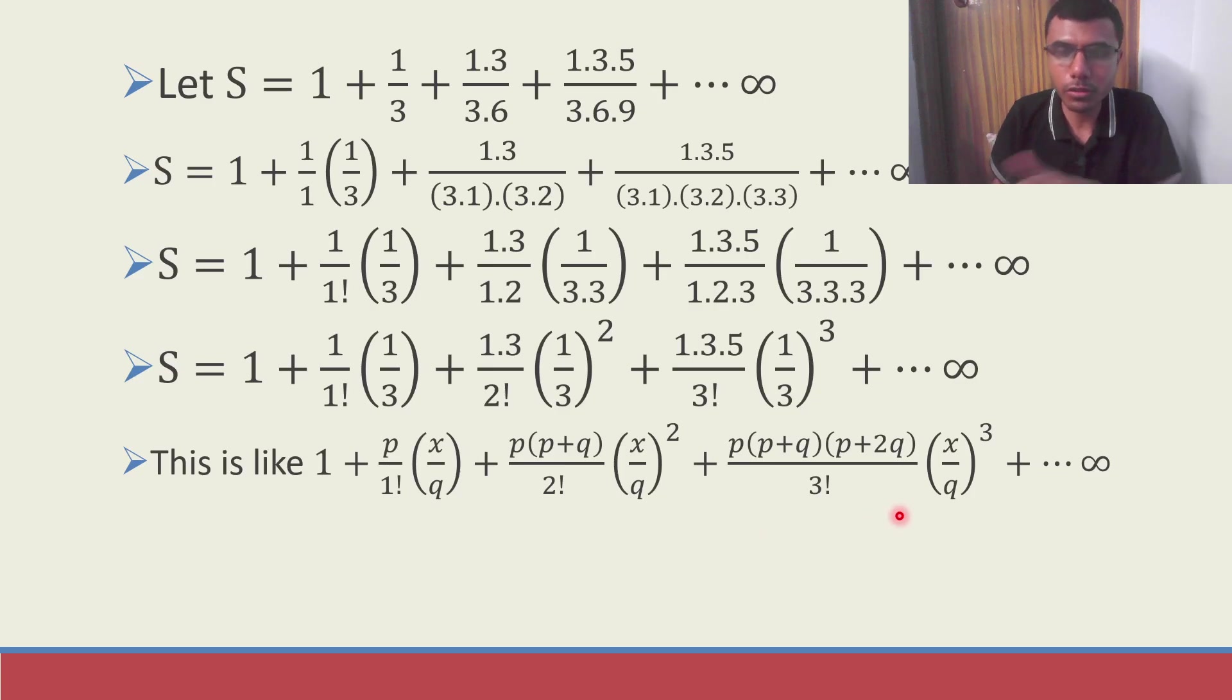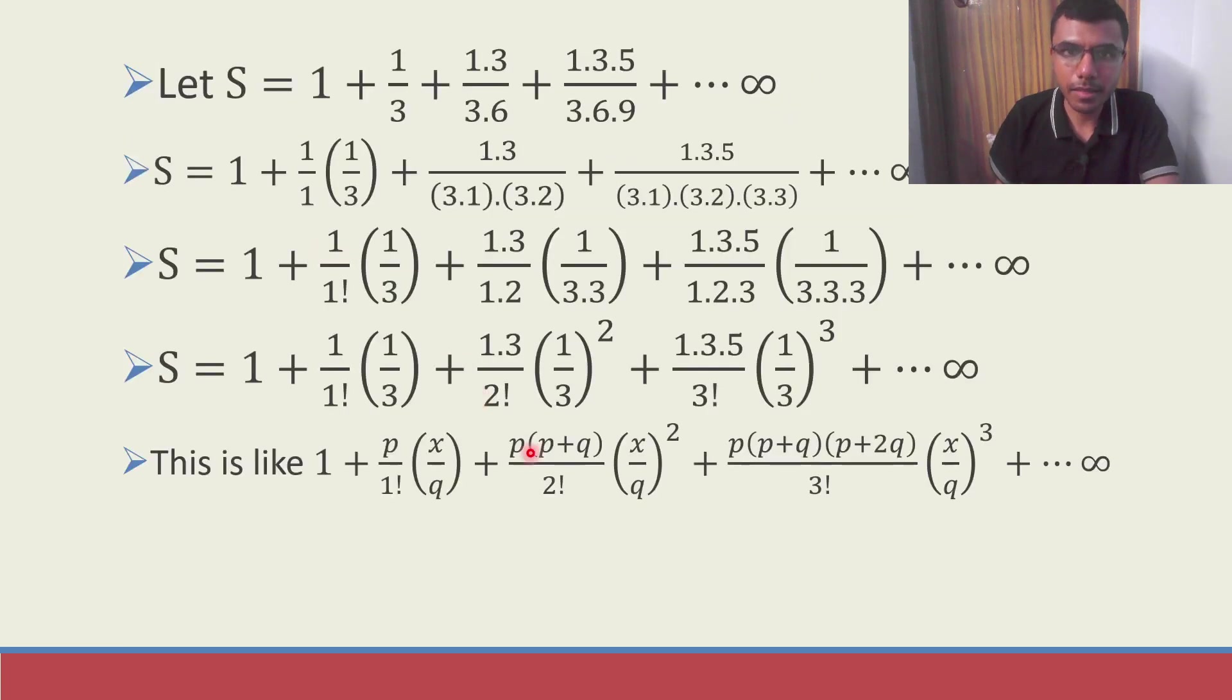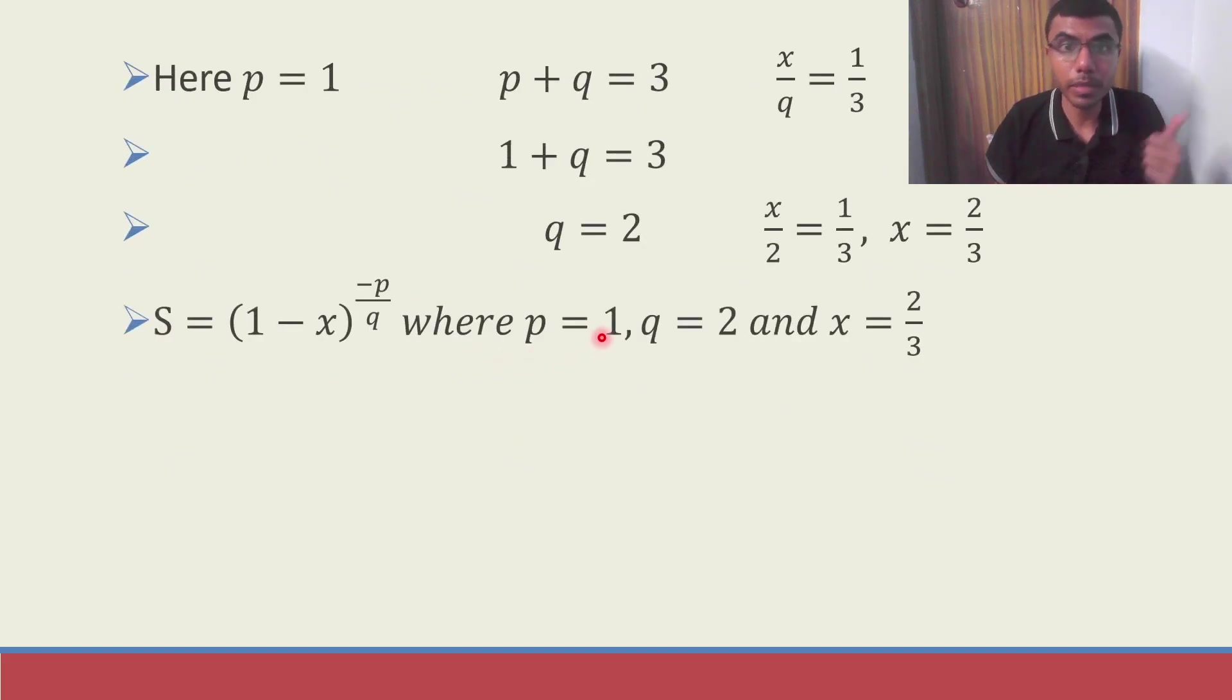So this entire thing is going to reduce to 1 minus x whole power minus p by q. And this series is exactly like this. So S is nothing but 1 minus x whole power minus p by q where my p is 1, q is 2 and x is 2 by 3.